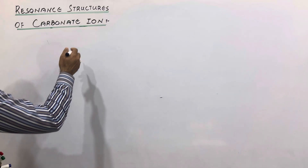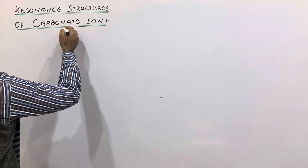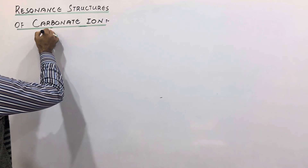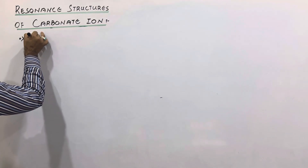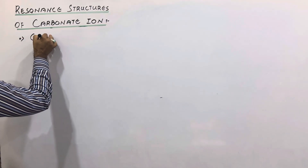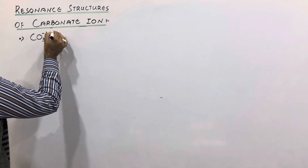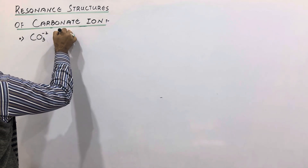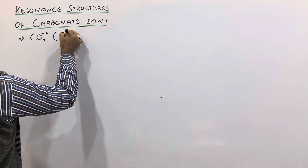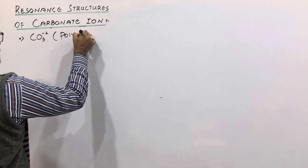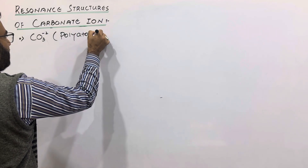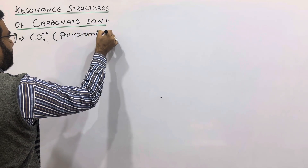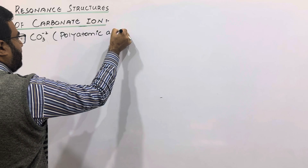Let us talk about the resonant structures of the carbonate ion. The formula of carbonate ion is CO3²⁻. It is a polyatomic anion.